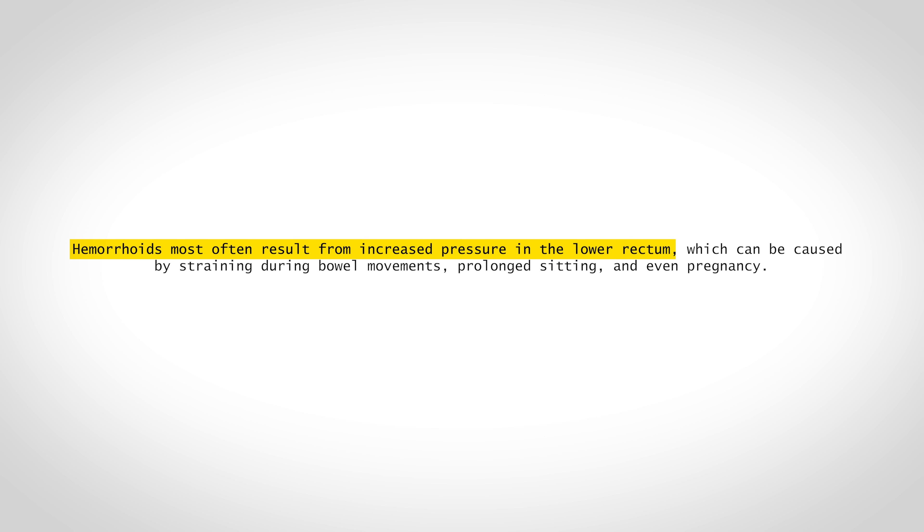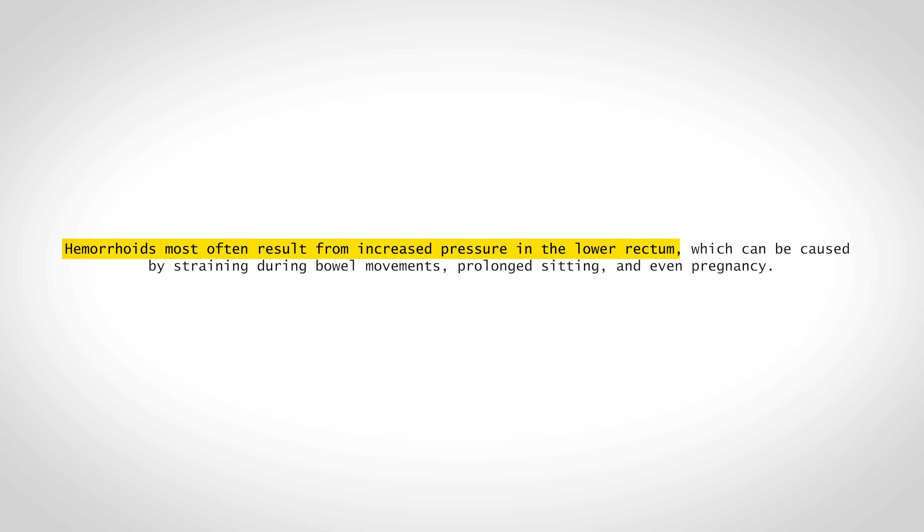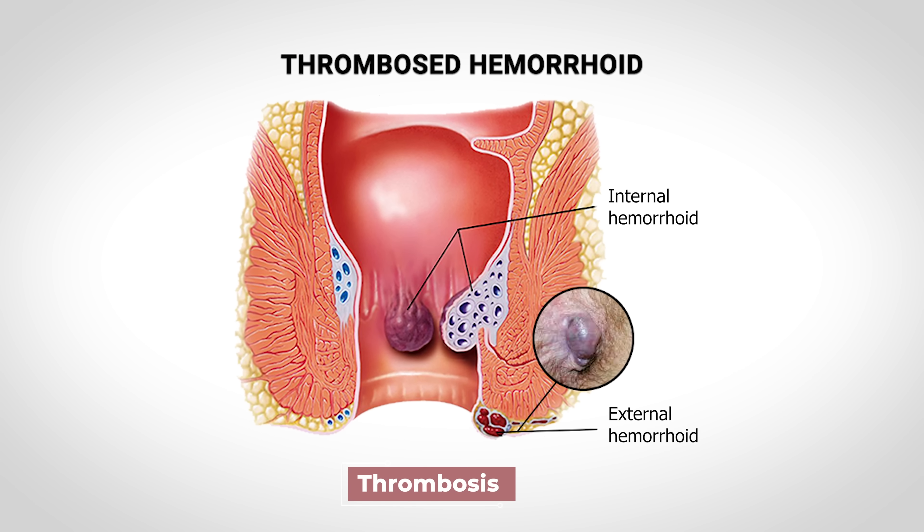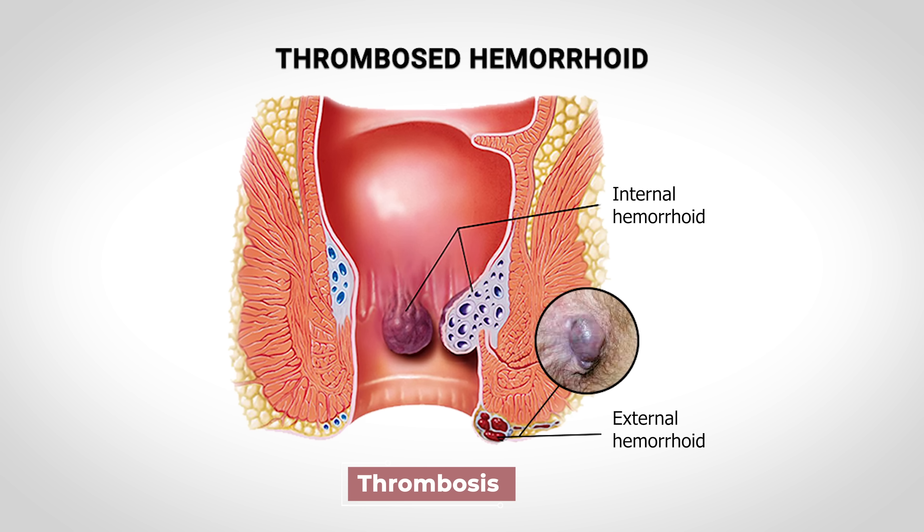Hemorrhoids most often result from increased pressure in the lower rectum, which can be caused by straining during bowel movements, prolonged sitting, and even pregnancy. They are not really dangerous, but external hemorrhoids can be quite painful, especially if a clot forms within the hemorrhoid — a process called thrombosis. We are not talking about a clot in an artery to the heart, brain, or lungs; this is a clot in a dilated vein in the anus.